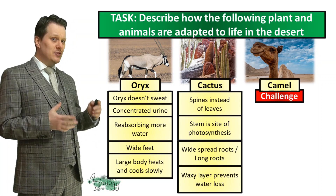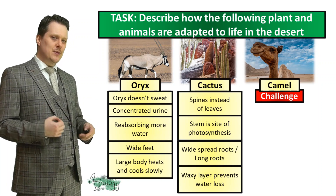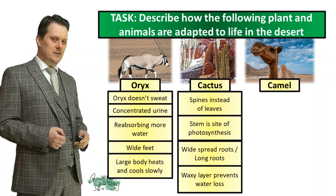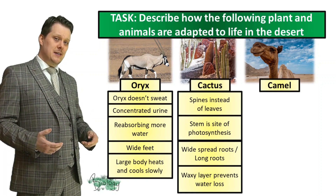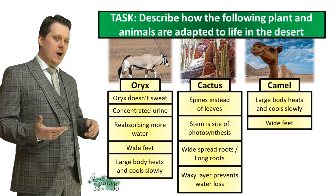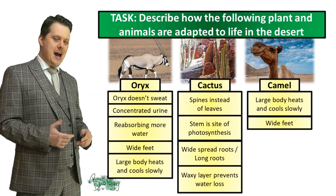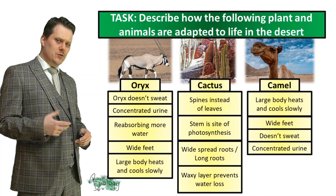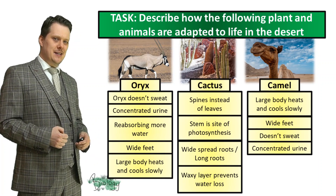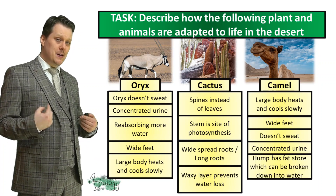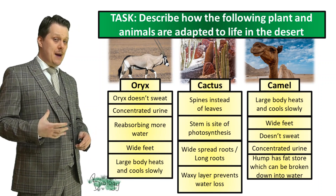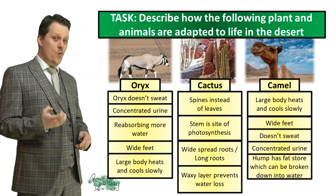Now let's have a look at our challenge, which is the camel. The camel lives in a very similar habitat to our oryx, so it's probably going to have many of the same adaptations. Our camel has a very large body, which allows it to thermoregulate just as well as the oryx. It also has wide feet for increased traction on the sand. Our camel also doesn't sweat and has concentrated urine, meaning it's reabsorbing a lot of that water in the kidney. Our camel also has a hump of fat on its back, and this fat can be broken down into water and energy, so our camel can go for really long stints in the desert without water.